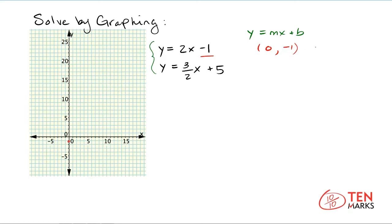Now if your slope is two, you can write this as two over one, which means from the y-intercept you go up two and to the right one to find the second point. Up two and over one brings me to that point right there. Let me connect these two points with a line.